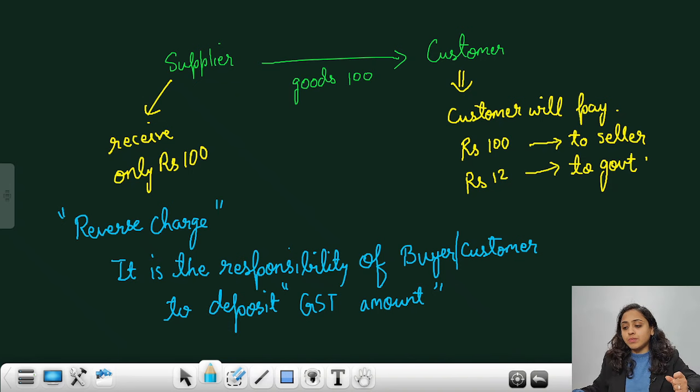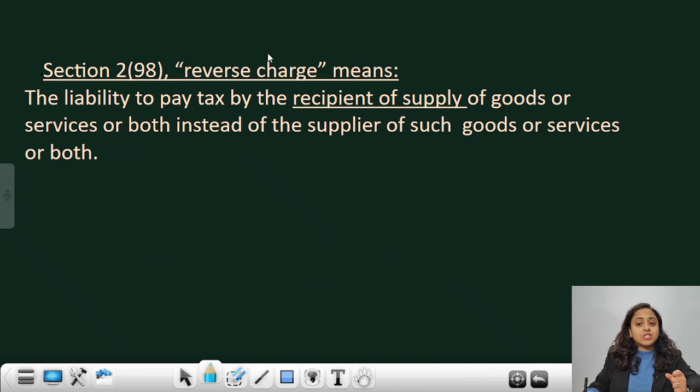So we will quickly take the differentiation path. The reverse charge, as you know, it is the recipient's, customer's responsibility. This is the definition given under GST Act. The liability to pay tax by the recipient of supply of goods or services or both instead of supplier. It is the responsibility of customer instead of supplier. Your seller does not have to deposit.